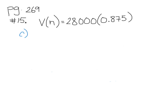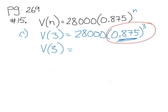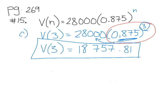Question C asks for the car's value at the end of 3 years. All we do is plug in 3. I get 0.875 to the power of 3, then multiply by 28,000. Remember to do the exponent first before multiplying by 28,000. Rounding to the nearest penny, the answer is $18,757.81 — that's how much it's worth after the third year.